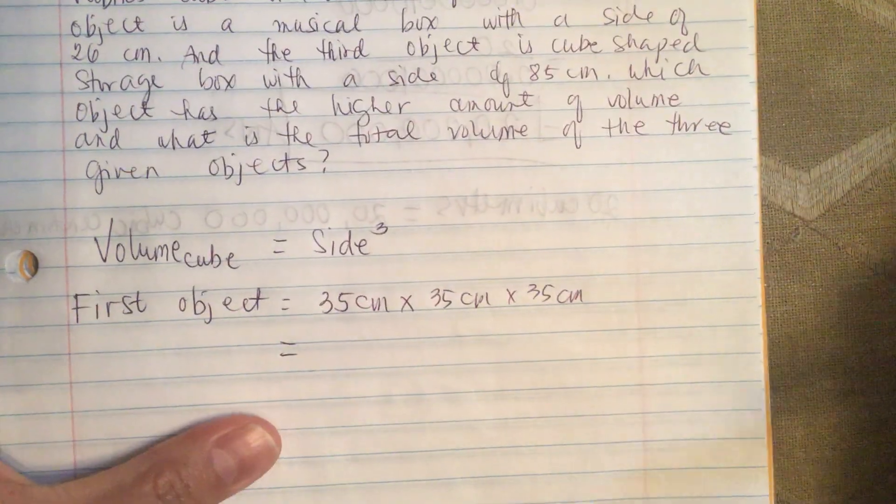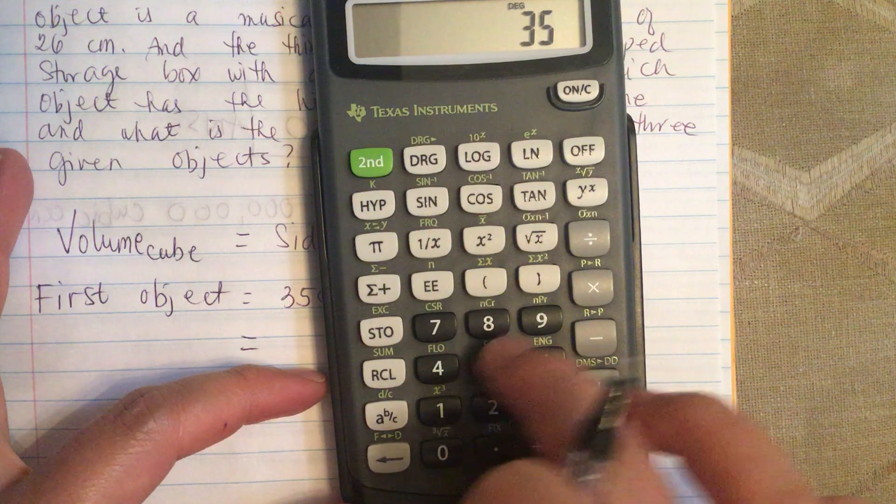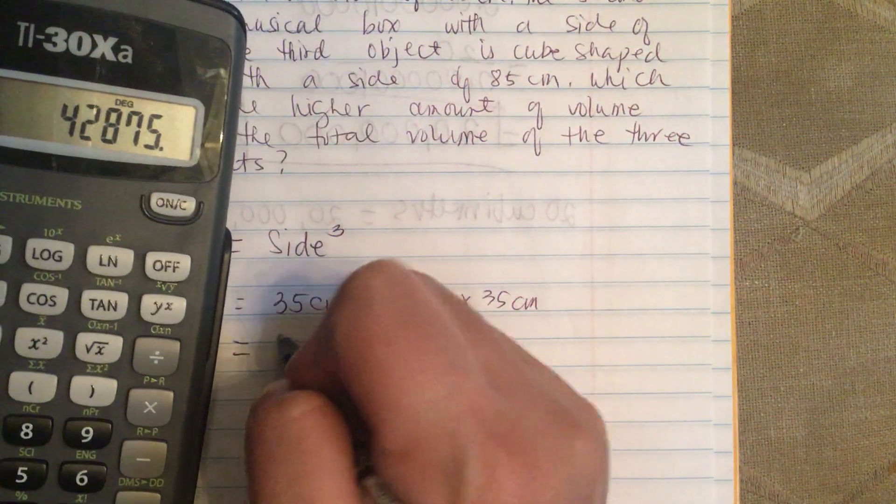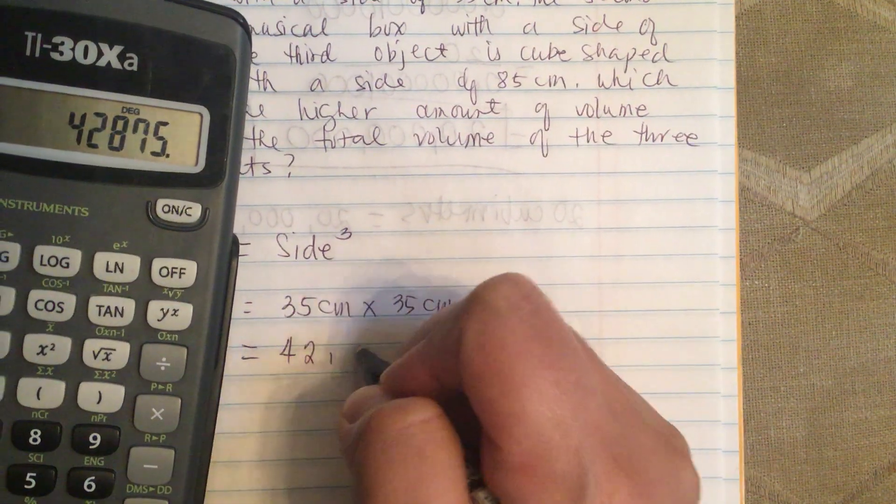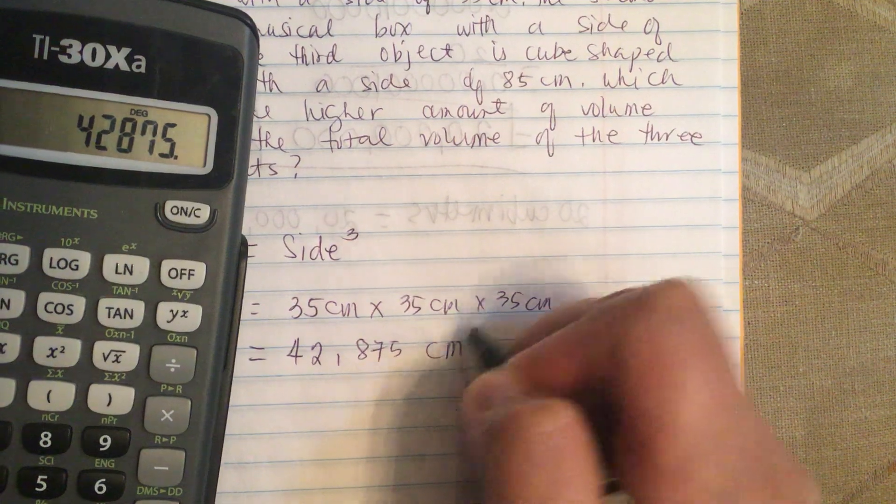So 35 times 35 centimeter times 35 centimeter. So 35 times 35 times 35 is equal to 42,875 cubic centimeter.